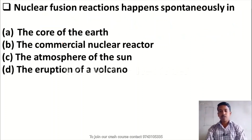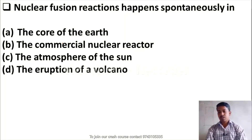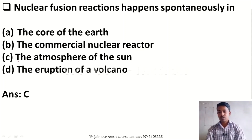Nuclear fusion reactions happen spontaneously in: Option A, the core of the earth; Option B, the commercial nuclear reactor; Option C, the atmosphere of the sun; Option D, the eruption of volcano. Here the right answer is Option C — the atmosphere of the sun is the correct answer.